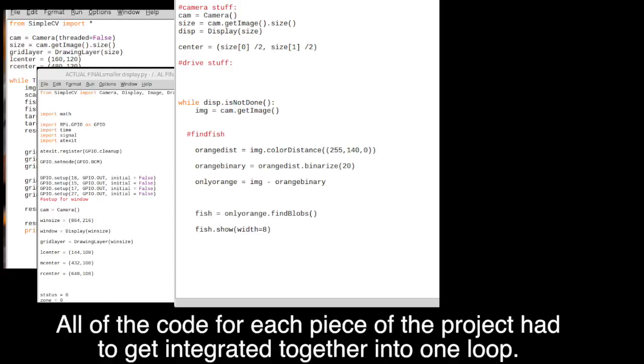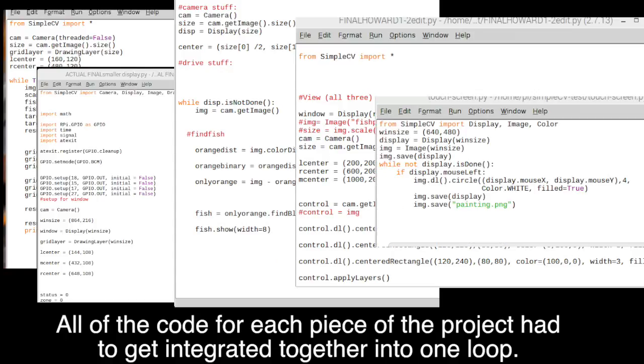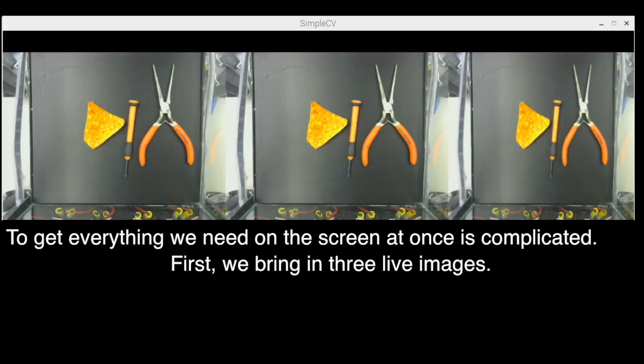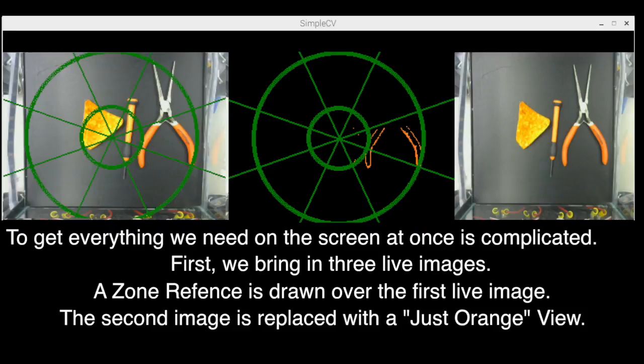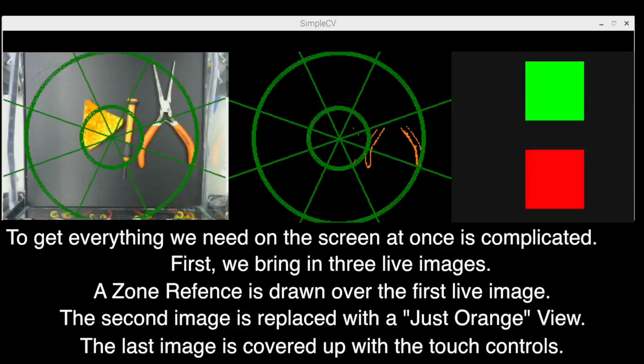All of the code for each piece of the project had to be integrated together into one loop. To get everything we need on the screen at once is complicated. First, we bring in the three live images. A zone reference is drawn over the first live image. The second image is replaced with just orange view. The last image is covered up with the touch controls.